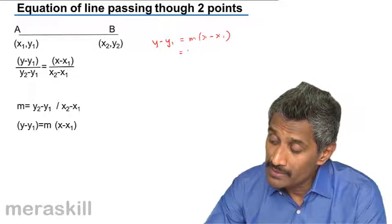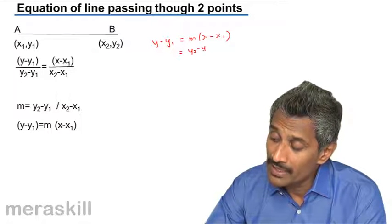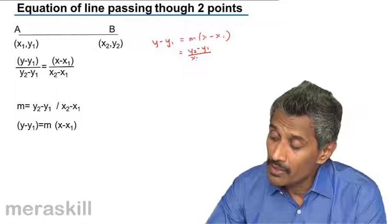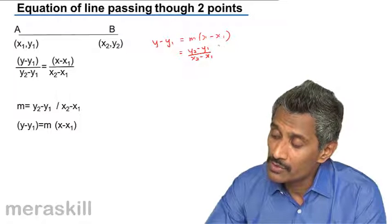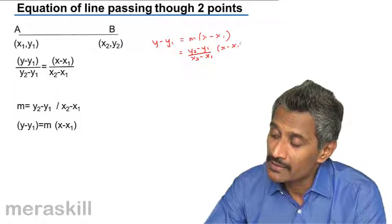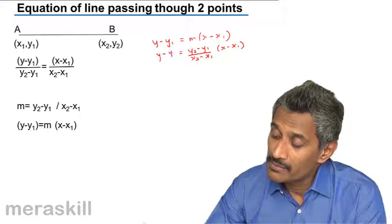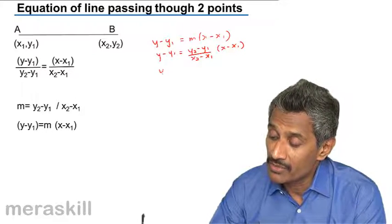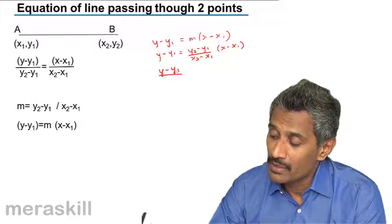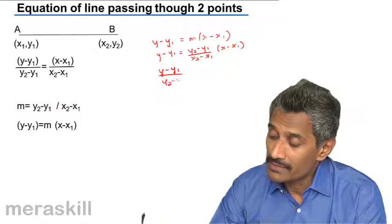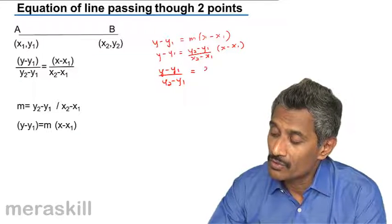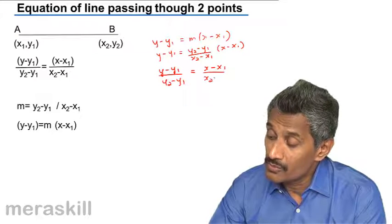But we know m is nothing but y2 minus y1 upon x2 minus x1. So the other thing would remain as they are y minus y1. We can just rearrange and we get y minus y1 upon y2 minus y1 is equal to x minus x1 upon x2 minus x1.